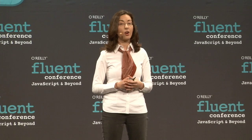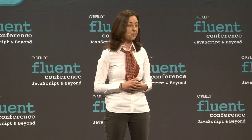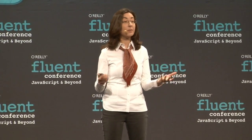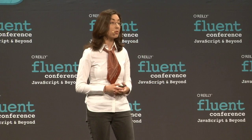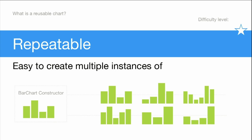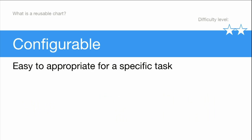I wanted to start today and talk about what are the four principles of creating reusable charts, and break those down. The first being: when you create something reusable, it means that it is repeatable. Note there's difficulty stars in the corner — as we go through these, you'll see it'll get a little bit more challenging. What I mean by that is if I have a constructor for making a bar chart, I can go ahead and create quite a few bar charts.